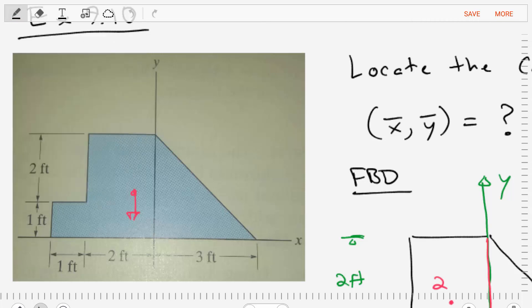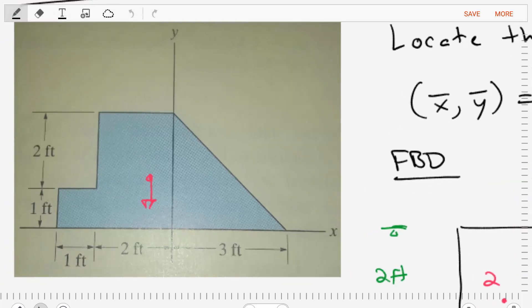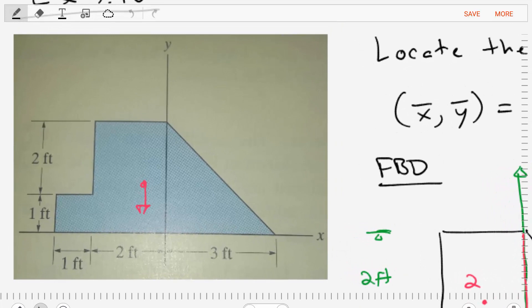So looking at the area that we're given, it is a complex area that really can't be expressed by a single equation, right? This kind of problem is what we call a composite body problem.